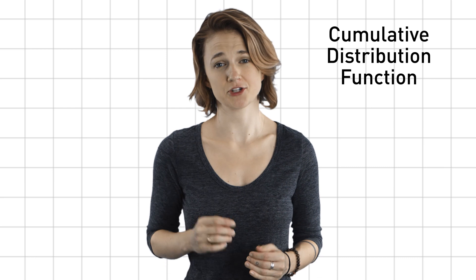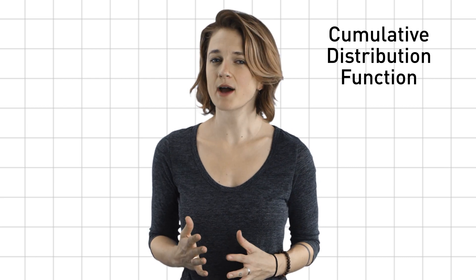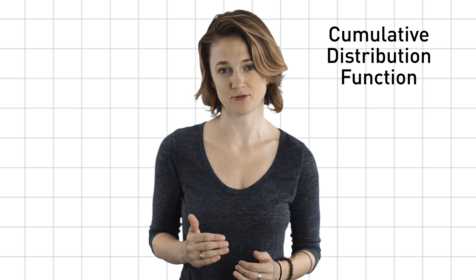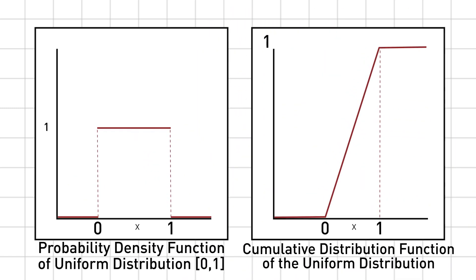But now, let's talk about the cumulative distribution function. It tells you how likely you are to randomly select something below that value. For the uniform distribution, it's pretty easy. For a randomly selected point, there's a 0% chance it's smaller than 0, 50% chance it's smaller than 1 half, and a 100% chance it's smaller than 1.